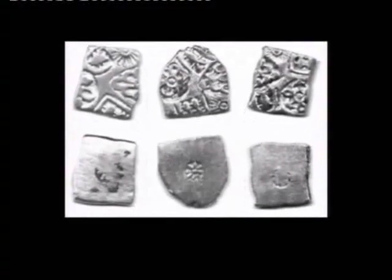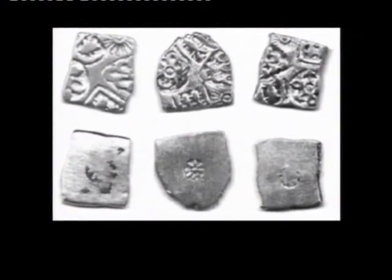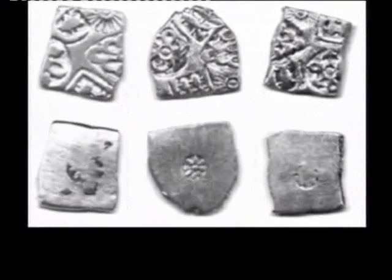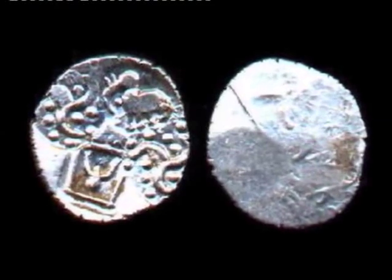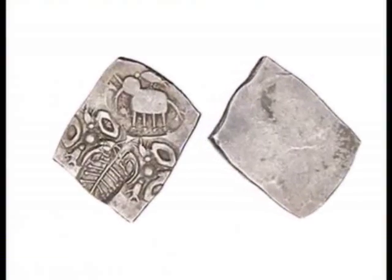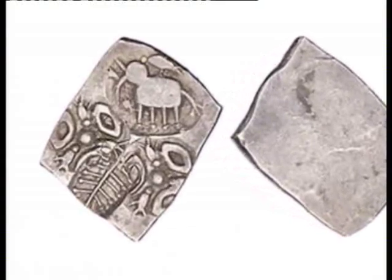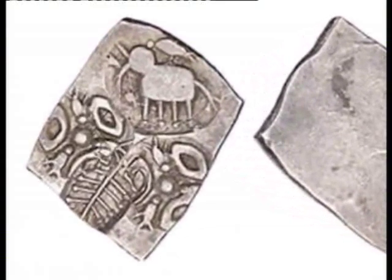Another symbol common to the Vanga region was the wheel, but the flan was quite thin and flat. The flans of Avanti coins and Andhra coins were also thin. In the coins of the Ashmaka region and Andhra, which were similar to each other, the elephant was very much represented and was a common type.